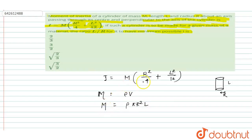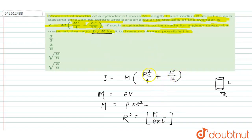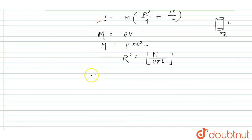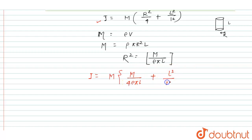This is the value of M. Then we put the value of r², where r² = M/(ρπl), because we have two variables r and l, and we need to find the ratio l/r. Substituting r² = M/(ρπl) into the moment of inertia formula, we get I = M × [M/(ρπl)]/4 + l²/12.